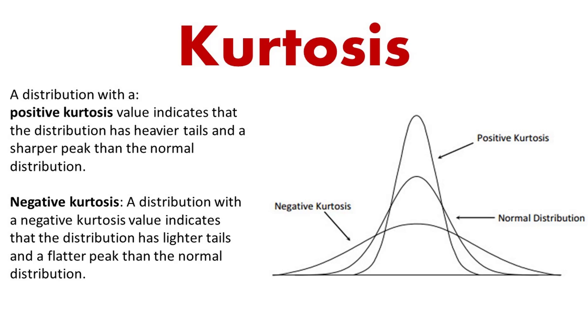Negative kurtosis means the distribution is more mound-like — the opposite of a sharp peak. The distribution is more spread out than normal, without that sharp central peak.